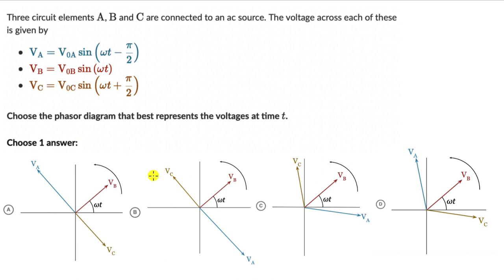Hopefully you have given this a shot. Over here we have three circuit elements A, B and C which are connected to an AC source and we have these three equations. In the options we can see the phasor diagrams for each of these three circuit elements. Let's try to look at the phase of these three circuit elements and understand the phase difference between them.